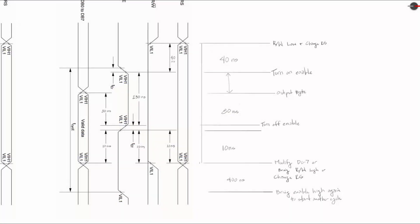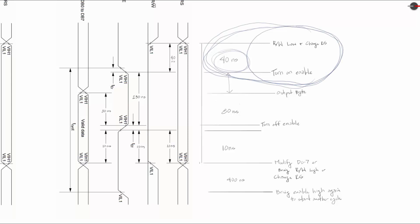Now we have our circuit set up. We can test the timing diagram and the code that we have to create. I plan on setting the read-write and the register select. The register select is going to be set between either writing a character or writing a command. So we're going to set the read-write, change the register select, wait 49 nanoseconds, and then turn on the enable. This will all be in one function.